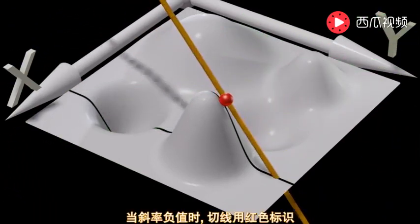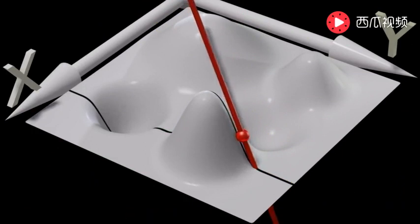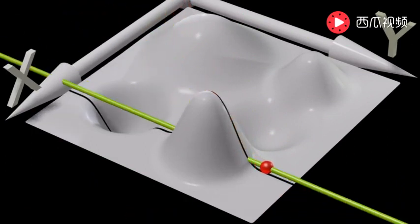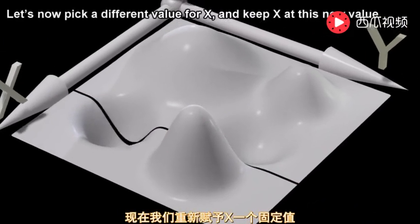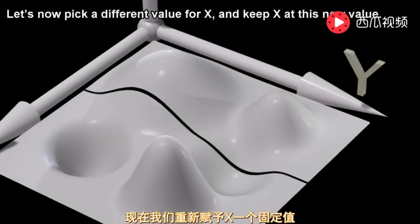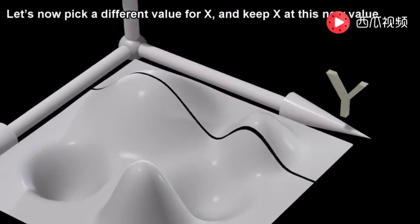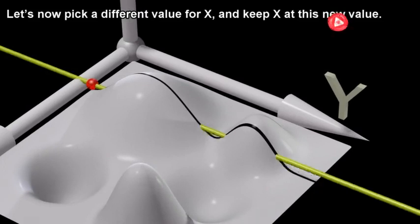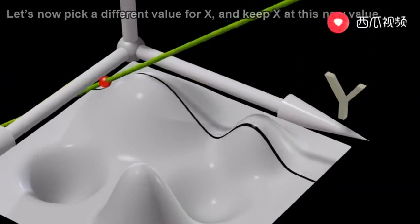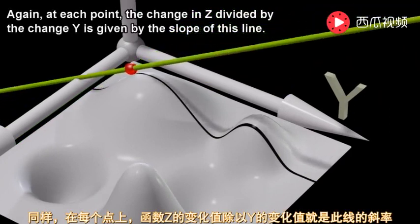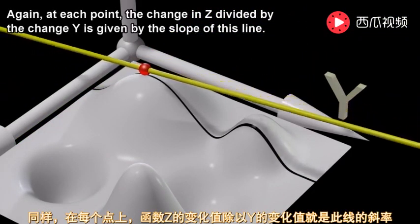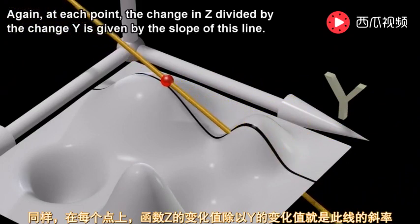Red indicates a negative slope. Let's now pick a different value for x and keep x at this new value. Again, at each point, the change in z divided by the change in y is given by the slope of this line.